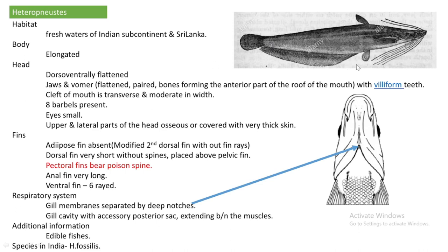The jaws have vomer bones. The vomer is a paired bone located on the anterior part of the roof of the mouth — the inner side of the upper jaw. This vomer bone also bears villiform teeth. Villiform teeth are teeth shaped like the teeth of a saw. The cleft of the mouth is transverse and moderate in width. Eight barbels are present.